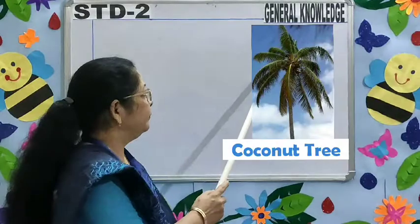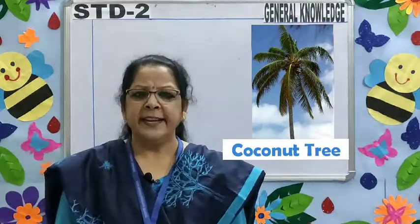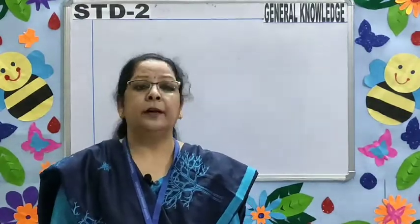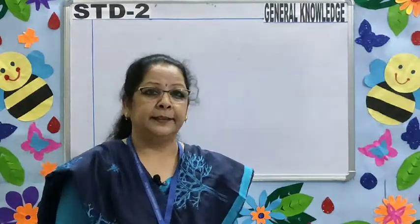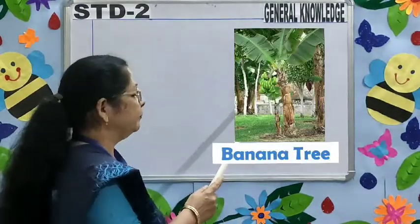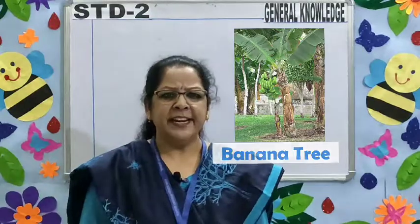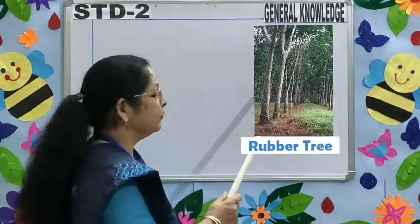Coconut tree — it gives us coconut, fiber, and oil. Banana tree — we eat the flower and the fruit of it. Banana leaves are used as plates. Rubber tree — a milky fluid comes out of the rubber tree called latex, and many objects are made out of it.